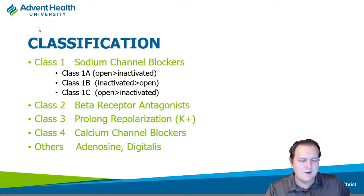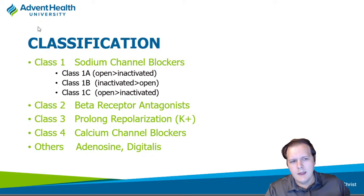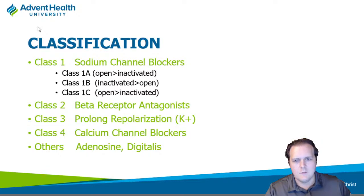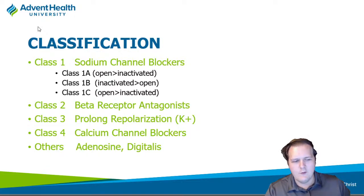Class two is your beta receptor antagonists. We're going to talk about them as antiarrhythmics, but remember for the test you still need to know things about beta blockers — the difference between cardioselective and non-selective, common side effects, mechanisms. I don't want you to dump everything after an exam. This stuff will come up again and again, like using beta blockers for anxiety and panic attacks in behavioral medicine.